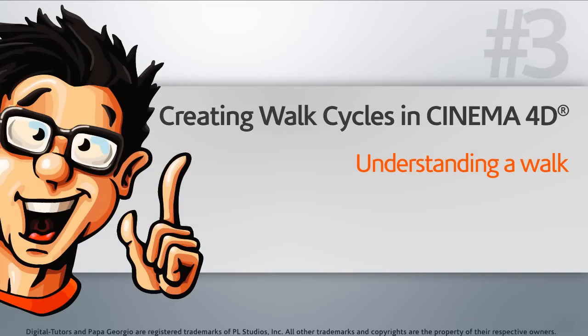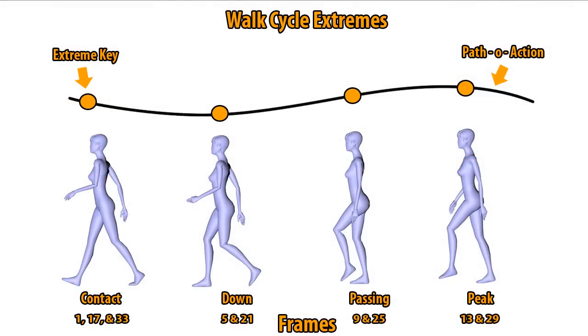In this lesson, we'll take a look at a diagram that will help us understand the extreme positions of a walk. So here it is, and as we can see, there are four extremes to a walk cycle.